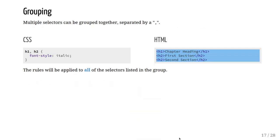CSS selectors can be grouped together by separating them with a comma. The declarations are then applied to any tag matching any one of those selectors. In a web scraping context, this allows you to target multiple portions of a page matching various conditions. For example, to get all headings on the page you might use: 'h1, h2, h3, h4' as your selector.